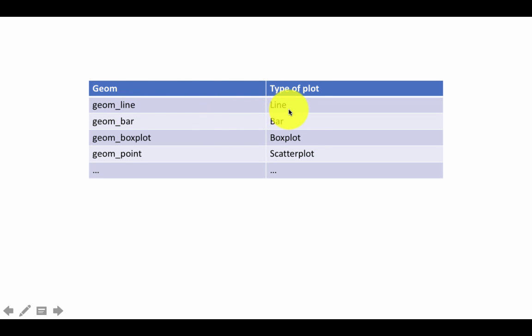And each produces a certain type of plot. So for example, geom_line produces a line plot. geom_bar produces a bar plot. geom_boxplot produces a box plot. Point is an exception. geom_point produces a scatter plot. They could have called it geom_scatter. I don't know why they didn't.